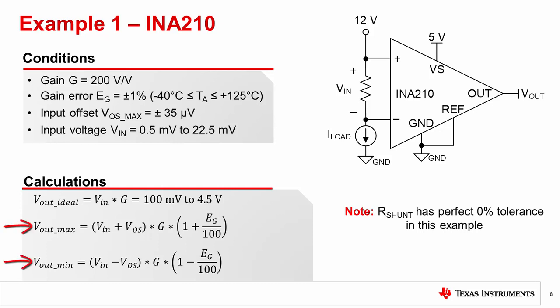The maximum and minimum possible output voltage equations are shown. When determining worst case error, it is best to pair a positive gain with a positive offset, and vice versa, a negative gain with a negative offset.